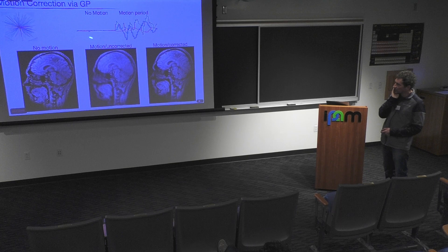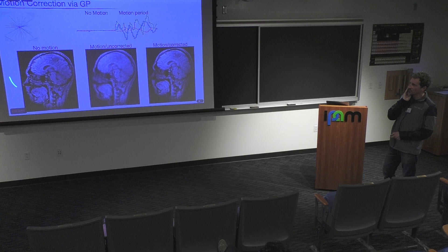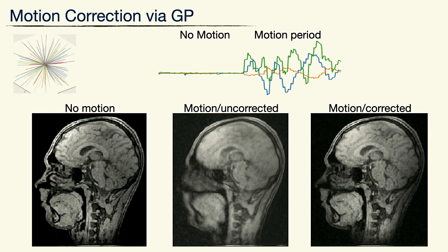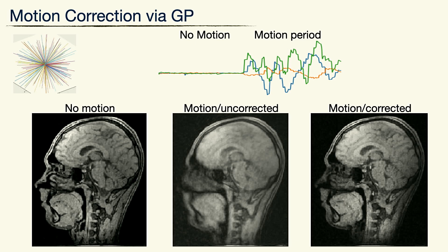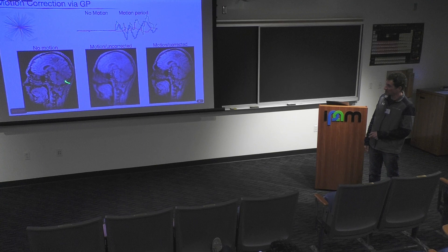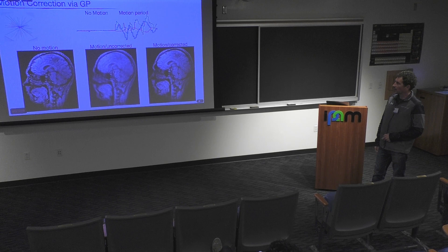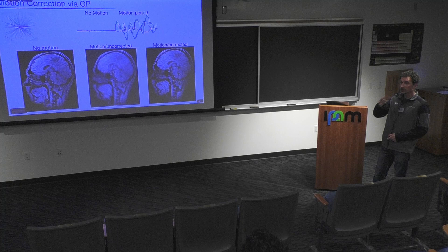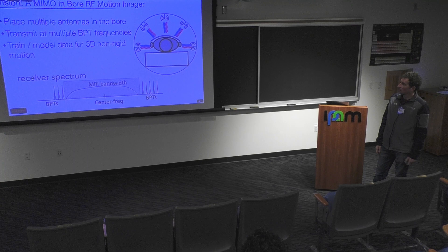Then during high-resolution acquisition, we collect BPT simultaneously, use the trained coefficients to estimate rotation and translation, and correct the high-frequency data. Translation is a linear phase and rotation is a rotation in the Fourier domain, so correction is straightforward. The results show that without motion, you get a clean brain image. With uncorrected motion, you get blurring and streaking artifacts. After applying BPT-based correction, the structure becomes visible again — not quite as perfect as the no-motion case, but much, much nicer and diagnostically useful versus non-diagnostic.